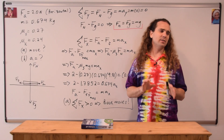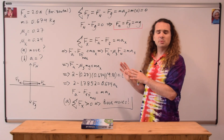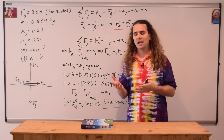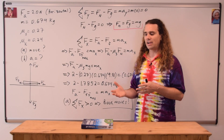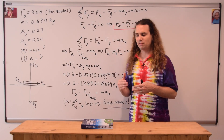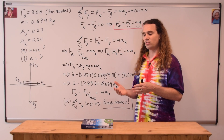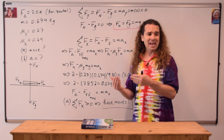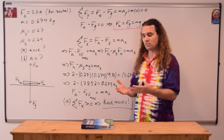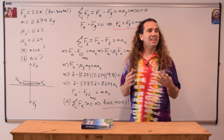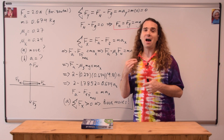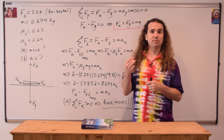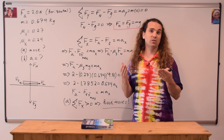If the net force in the x direction were negative, that would not mean that the book accelerates to the left. It would mean, in this particular case, that the force applied was less than the maximum force of static friction, and therefore the book does not move. The net force needs to be opposite the direction of the force of friction for the object to move.